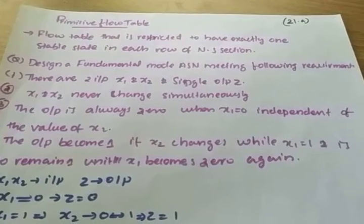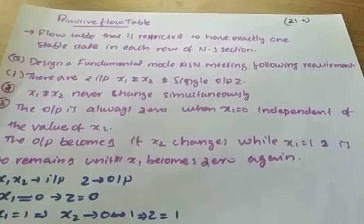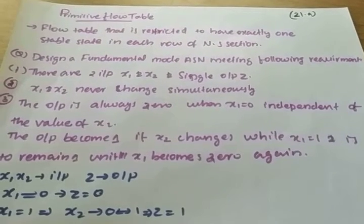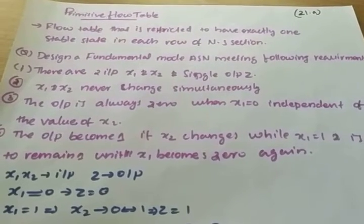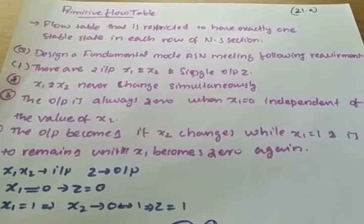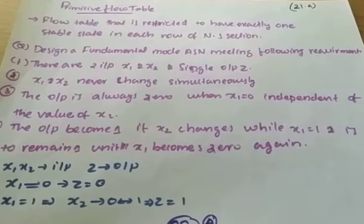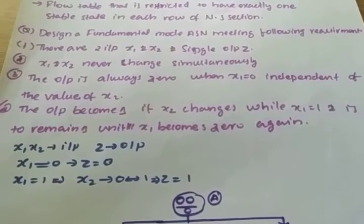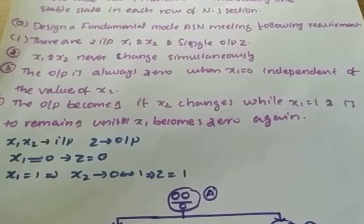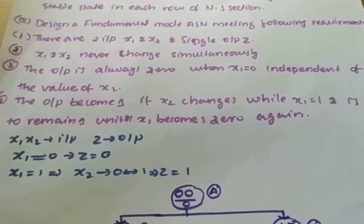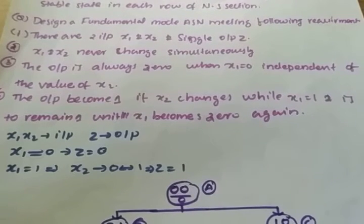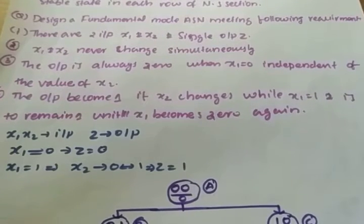There are two inputs, x1 and x2, and a single output z. x1 and x2 never change simultaneously. Output is only 0 when x1 is 0, independent of the value of x2. The output is 1 if x2 changes while x1 equals 1, and this remains until x1 becomes 0 again.